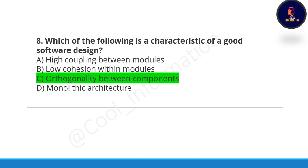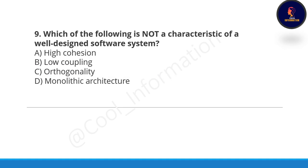Next question: which of the following is not a characteristic of a well-designed software system? Monolithic architecture is not a characteristic of a well-designed software system. High cohesion, low coupling, and orthogonality are the characteristics — keep this point in mind.